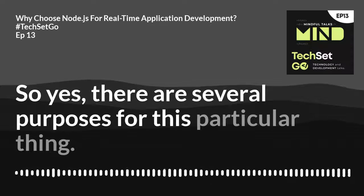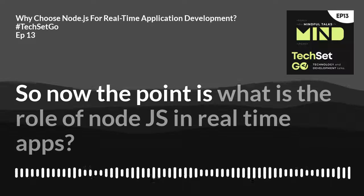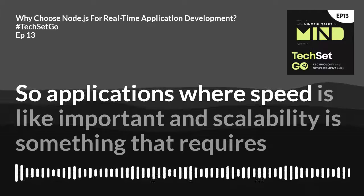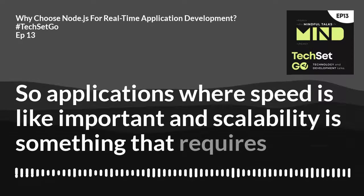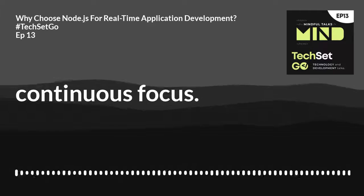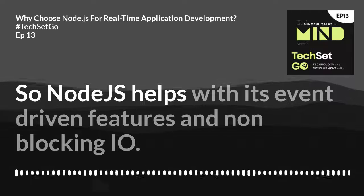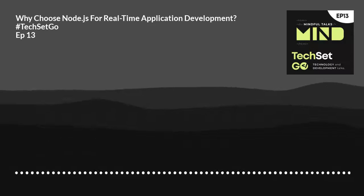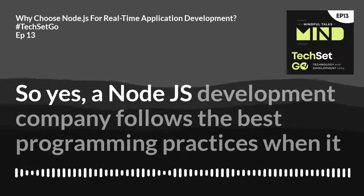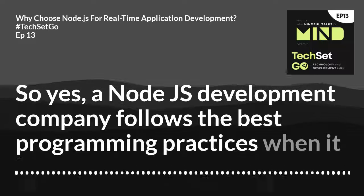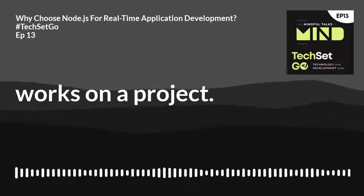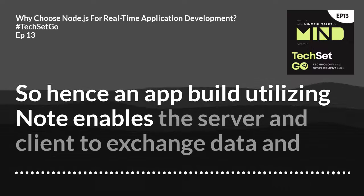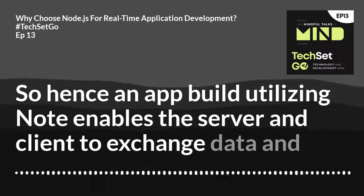So now the point is: what is the role of Node.js in real-time apps? In applications where speed and scalability require continuous focus, Node.js helps with its event-driven features and non-blocking I/O. A Node.js development company follows the best programming practices, and hence an app built utilizing Node.js enables the server and client to exchange data and communicate freely.